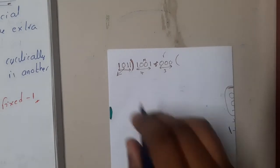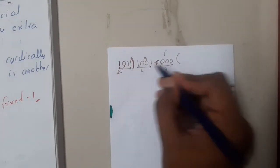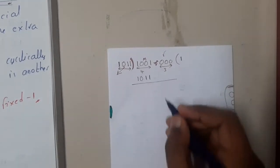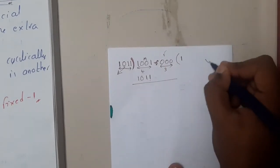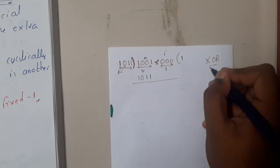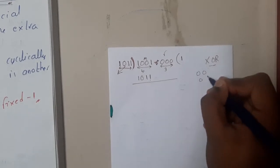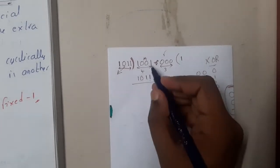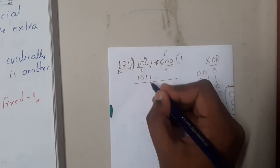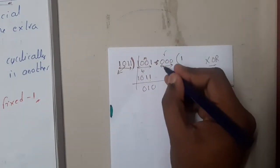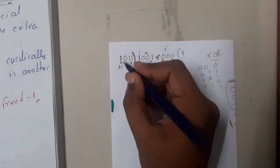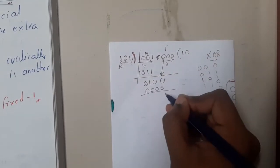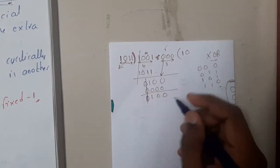Now we start the binary division. Since one matches with one, we proceed and get 1011. Remember, we are not subtracting here — we are directly applying XOR. Recall the XOR truth table: 0 XOR 0 = 0, 0 XOR 1 = 1, 1 XOR 0 = 1, 1 XOR 1 = 0. Matching bits cancel, then we bring down the next bit. To get zero, we multiply by zero, giving 0000, so we get 0010.